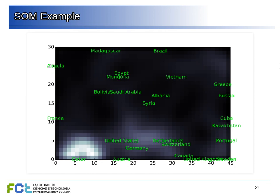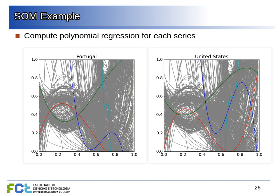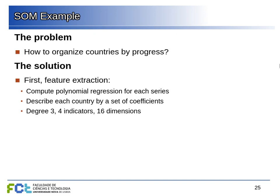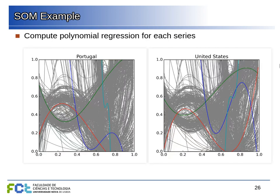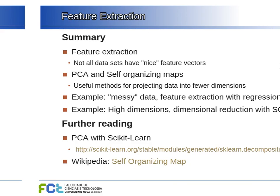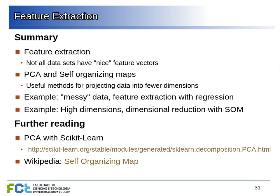This is one way to organize high-dimensional data into low dimensions for visualization. Self-organizing maps are good for this. An important part of this example is also the process of extracting structured features from messy, unstructured data — different countries have different numbers of data points, and the points don't correspond to exactly the same things. So we have two steps: first converting unstructured data into a fixed number of indicators, then projecting from 16 dimensions down to two for easier visualization.